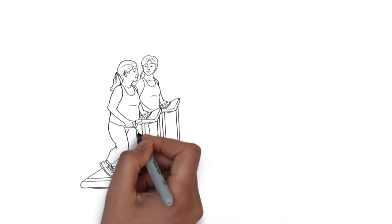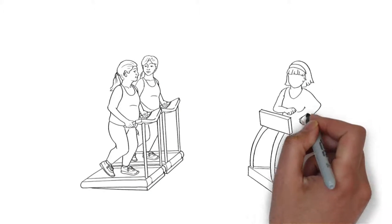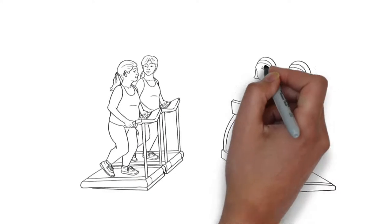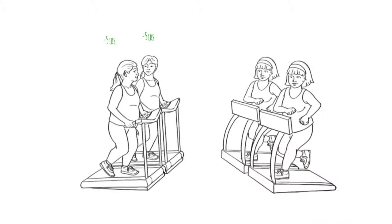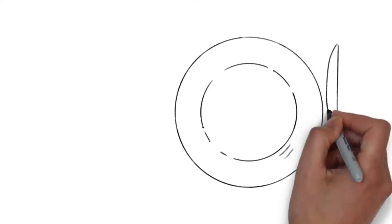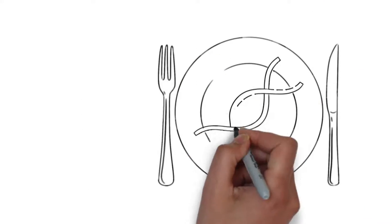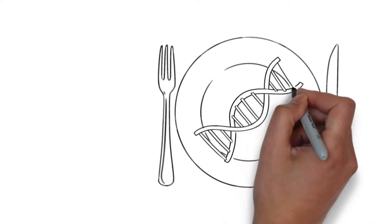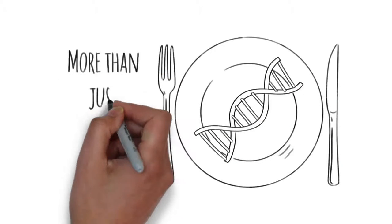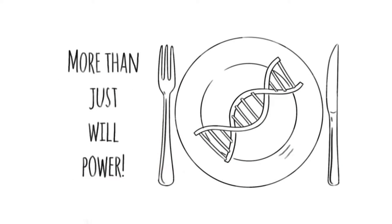When scientists did the study again, but instead put the twins on a diet and exercise plan, twins in the same pair lost the same amount of weight at the same time. And just like before, the amount of weight loss was different between twin pairs. This tells us that managing our weight is about more than just willpower. Your genes play a big role in deciding your weight and how your body responds to factors that can make losing weight harder.